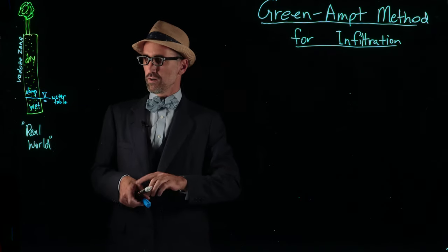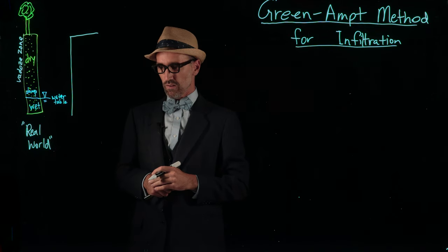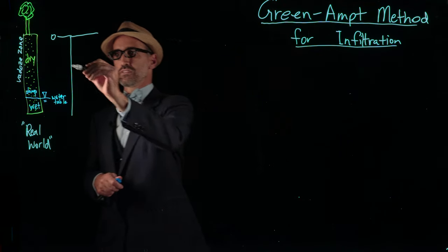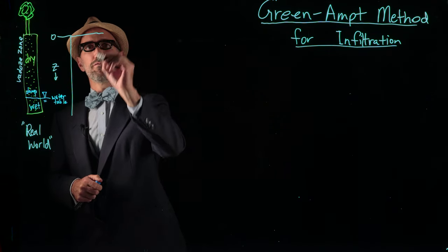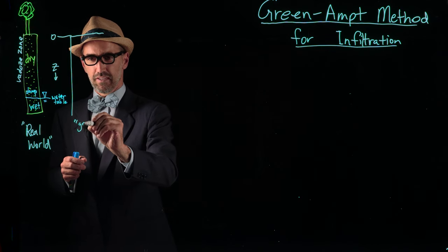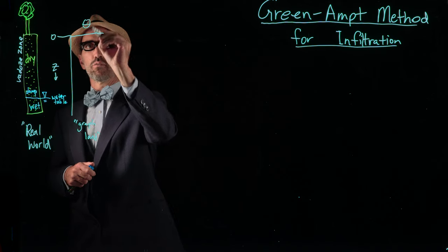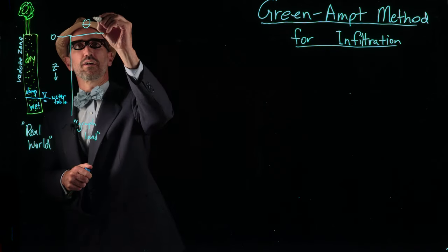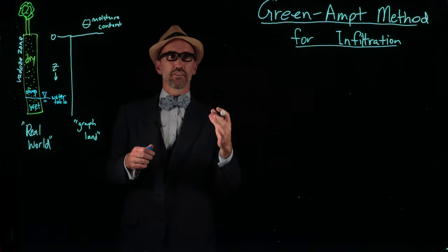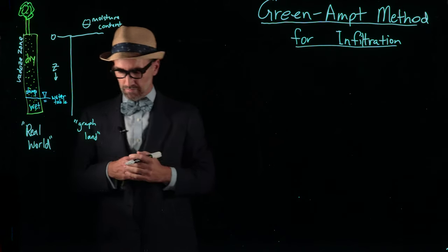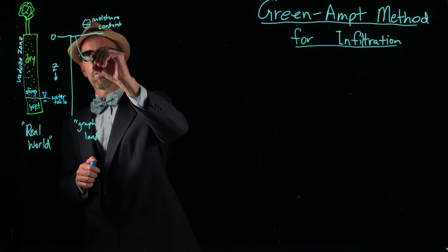We're going to make a version of this real world that I'll call graph land. This is a graph of the same column, starting from zero depth and going down. Depth here is often shown as z. On the horizontal axis of this graph is moisture content, often denoted with the theta symbol - the volumetric moisture content. Before an infiltration event, the moisture content curve might look something like this, which we've also covered in class.